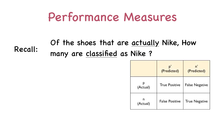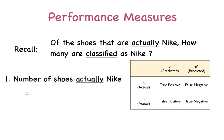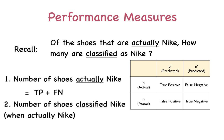From the recall definition, we also require two quantities. First is the number of shoes that were actually Nike — this is the number of true positives plus the number of false negatives. The second is the number of shoes correctly classified as Nike of the shoes that are actually Nike, which is once again the number of true positives. Recall is thus the number of true positives divided by the total number of true positives and false negatives.